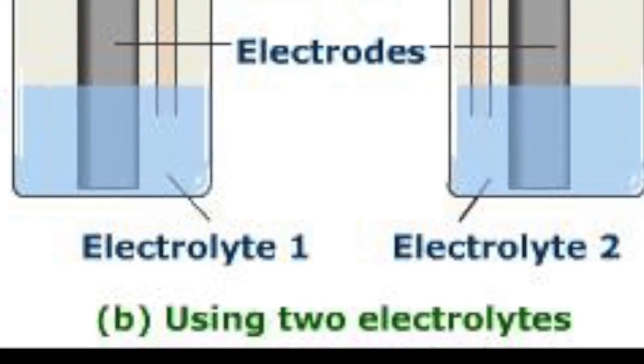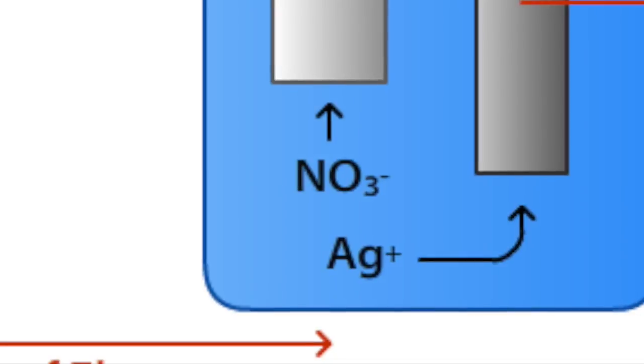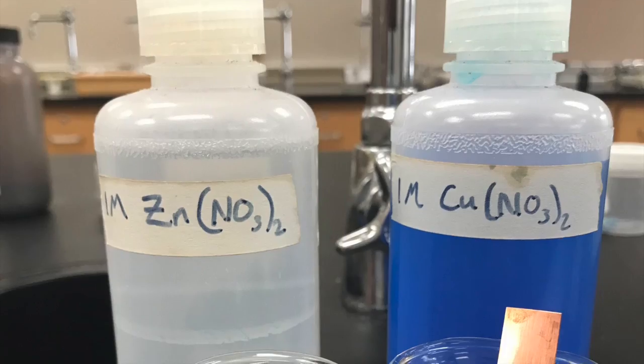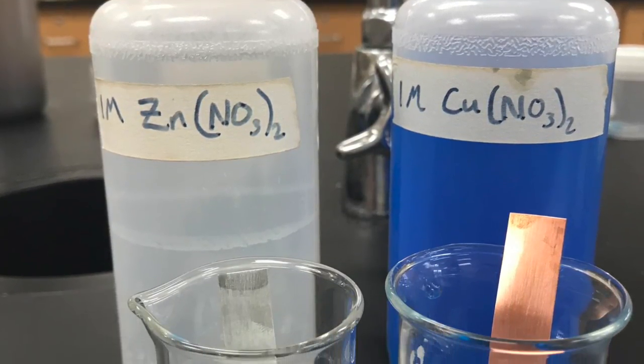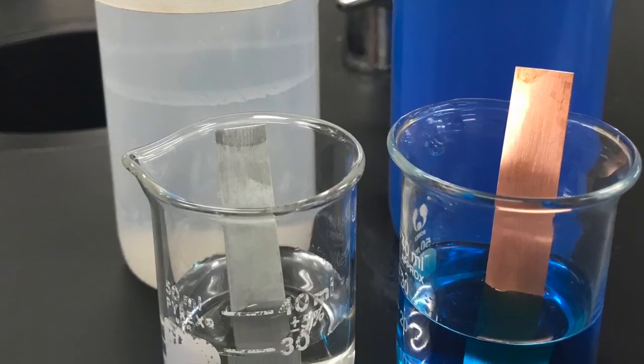With the solutions, electrodes are also needed to be reduced or oxidized. Select the corresponding metal to each solution and place it in the solution. For example, put the zinc metal in the zinc solution and the copper metal in the copper solution. They should be half submerged so the probes of the voltmeter can touch the electrodes, and not the solution.